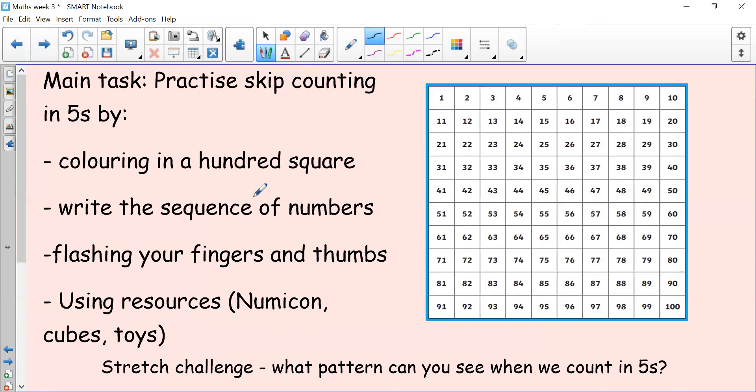Okay, now it's time for your main task. So we're going to practice skip counting in fives in a few different ways. If you pop over to teams, there is an assignment loaded with your activities on. But what we're going to be doing is coloring in the hundred square in fives. So just like we've just practiced, you can either circle the numbers or color them in. Then have a go at writing the sequence of numbers. And then have a go at using some resources at home. So you might want to use your toys or some straws or bricks, Lego bricks, anything you've got at home that can help you to count in fives. And send some photos as well. And then as a stretch challenge, I want you to have a go at writing a sentence to describe what pattern you can see when we count in fives. Okay, have a good day everybody. Bye bye.